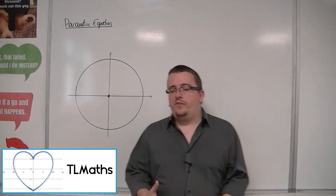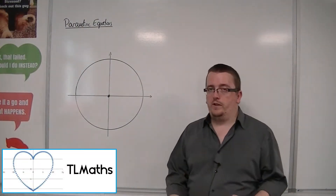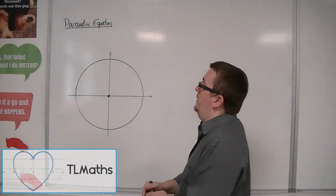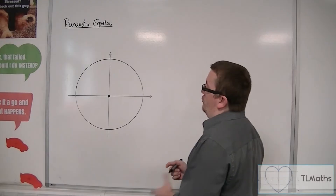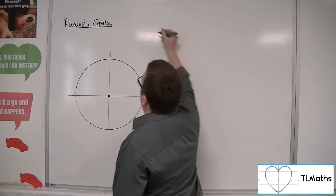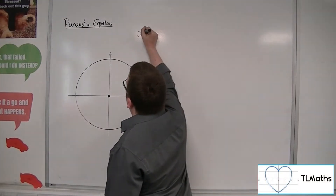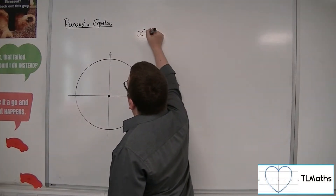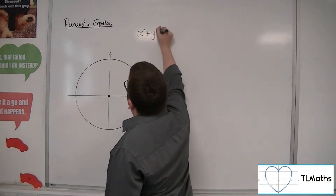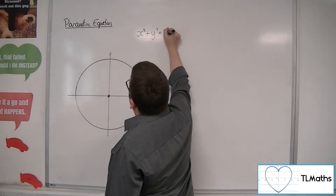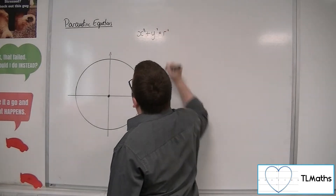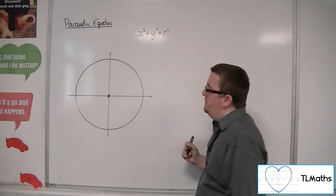We know that a circle centred at the origin of radius r has the equation x squared plus y squared equals r squared.